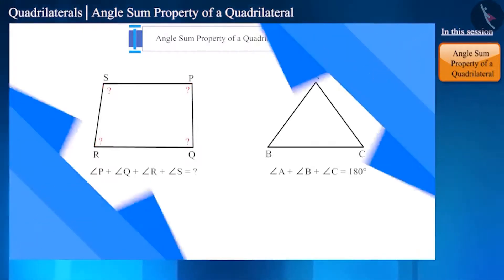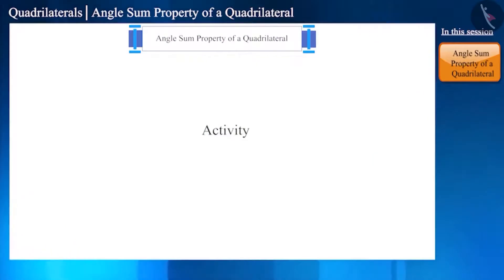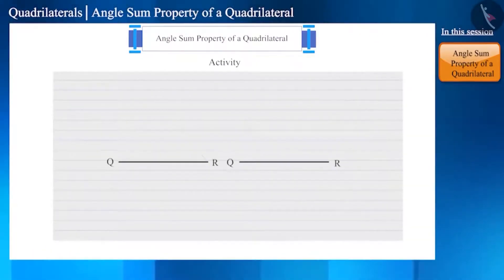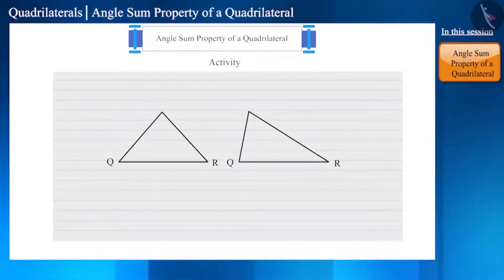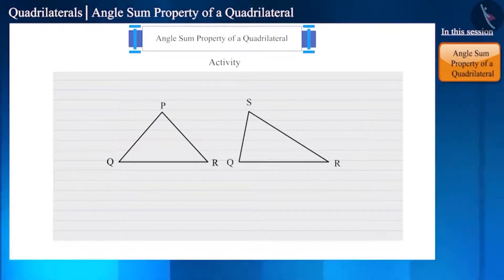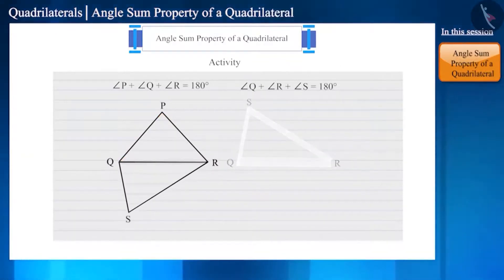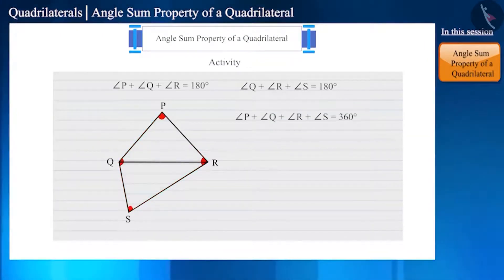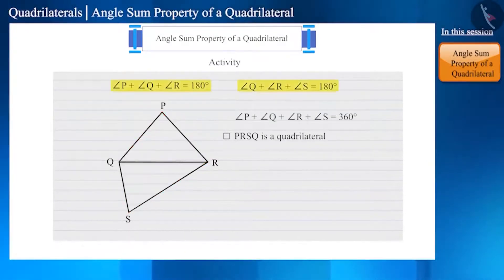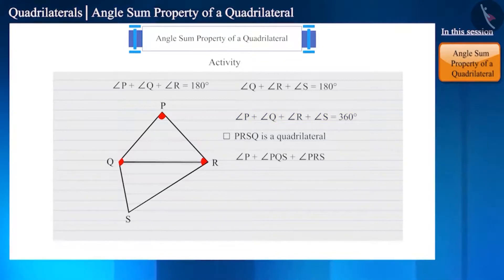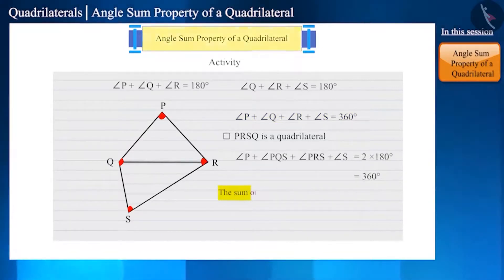Let's do an activity to understand it. Let's create two triangles with the same base on a paper. Let's name the first triangle as PQR and the second triangle as QRS. We know that the sum of the three angles of a triangle is 180 degrees. Now let's connect these two triangles to the base QR. The sum of all the angles of this shape so formed will be 360 degrees, and this shape is a quadrilateral. In comparison to the triangle, a quadrilateral has one extra triangle, but the sum of the angles of a quadrilateral is two times the sum of the angles of a triangle.